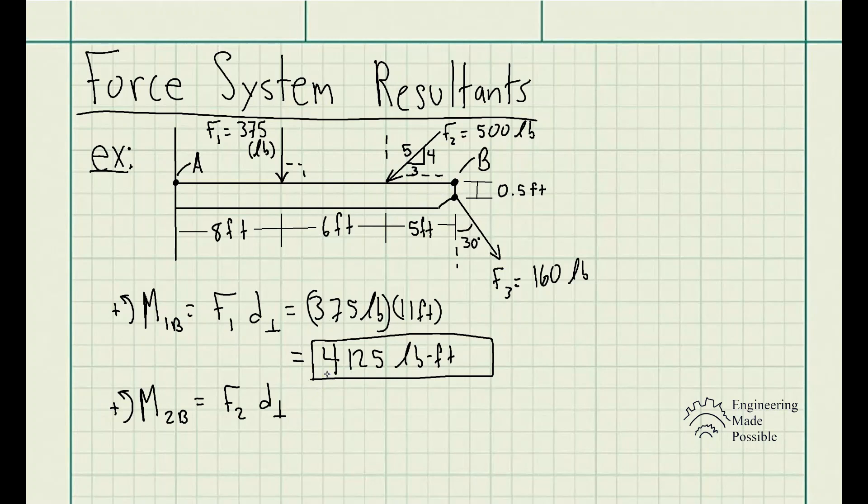We're only going to be considering the Y component, and this will be perpendicular along the axis of point B here. So this would be the perpendicular distance with respect to that point. So it's going to be 500 pounds times 4 fifths, because we're only considering the Y component of that force.